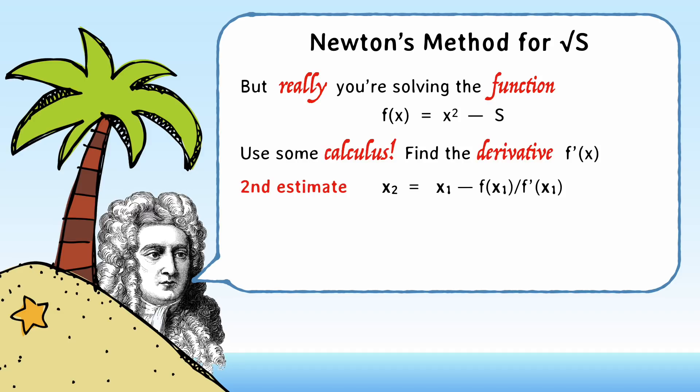And then your next estimate is your previous estimate minus the function at your previous estimate divided by the derivative at your previous estimate. And you can iterate that over and over again, and it converges incredibly quickly.